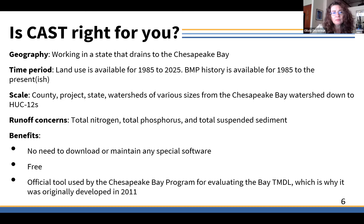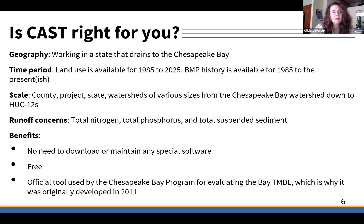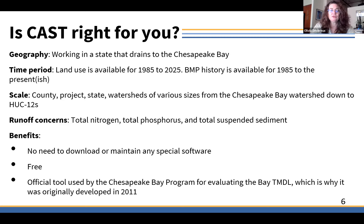The geographies available are county, project-level using pounds per acre, and watersheds of various sizes. We use the USGS hydrologic unit codes, or HUC — HUC-8, HUC-10, HUC-12. The larger the number, the more defined and smaller the watershed is. We model nitrogen, phosphorus, and sediment. We will also be adding carbon storage and carbon equivalency, the same as in COMET, but we don't expect that to be done until the end of this calendar year.